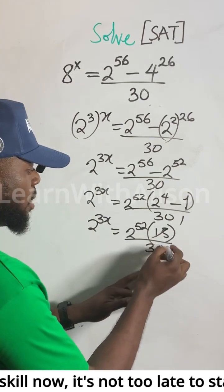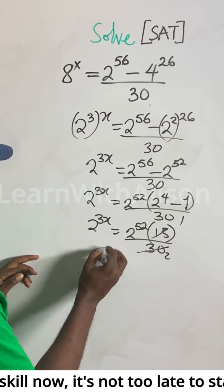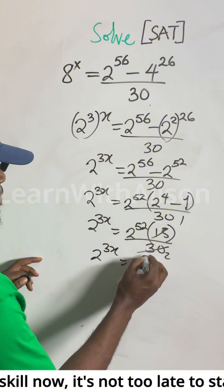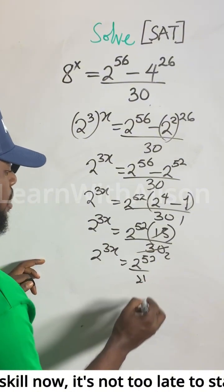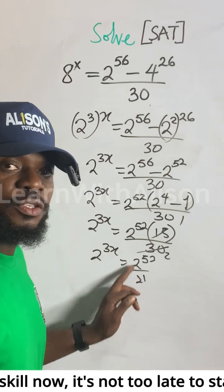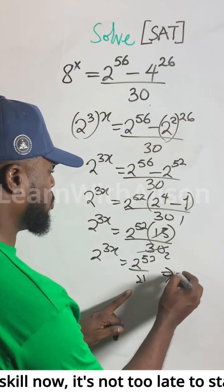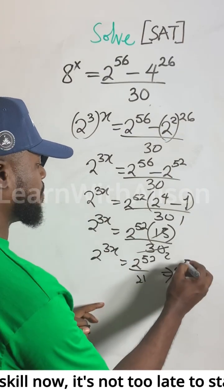Next, we reduce 15 over 30 to 1 over 2. So we have 2 to the 3x equals 2 to the power of 52 divided by 2 to the power of 1. According to the division law of indices, when the bases are the same, we subtract the exponents.